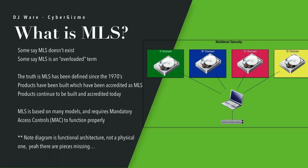MLS was originally based on two very primitive models, and we'll kind of talk about those — I'm not going to get into all the esoteric things about how it evolved because we'd be here until Friday afternoon. The thing to remember about MLS is it requires mandatory access controls in order to function properly. This diagram I have up here is not showing you everything — it's just a functional architecture diagram where I have four security domains that a user is allowed to access.